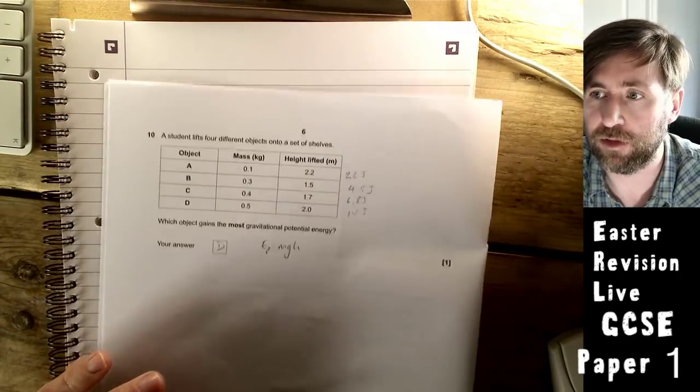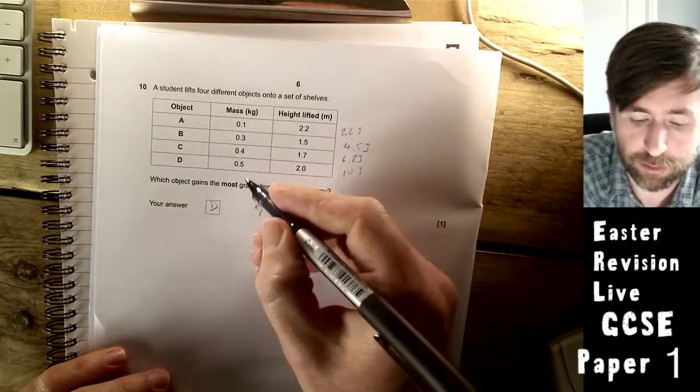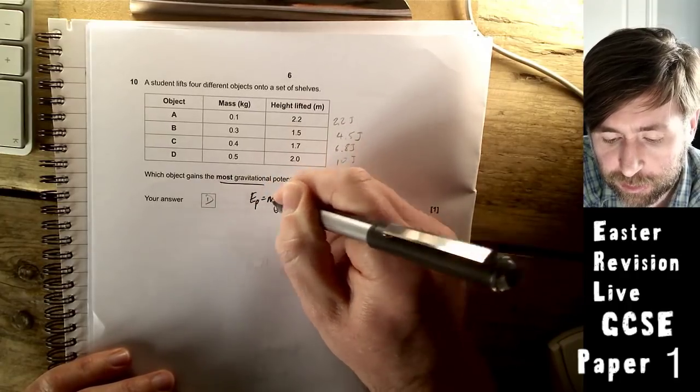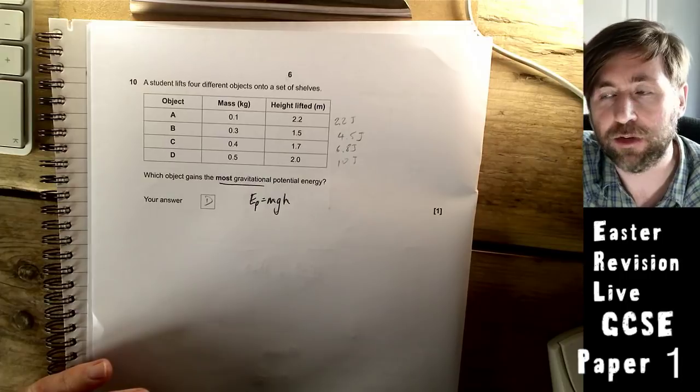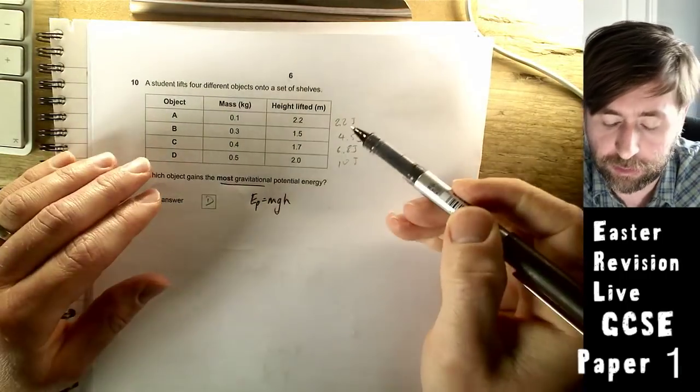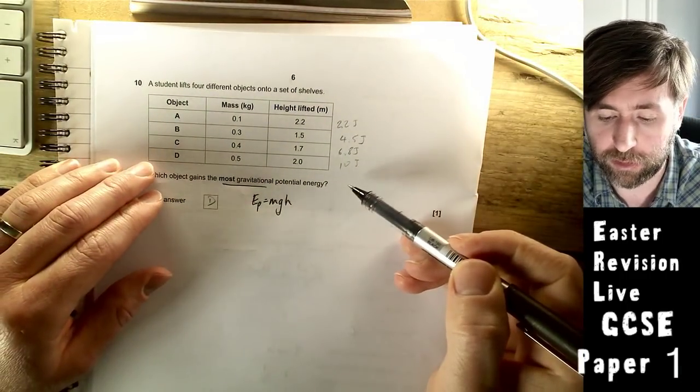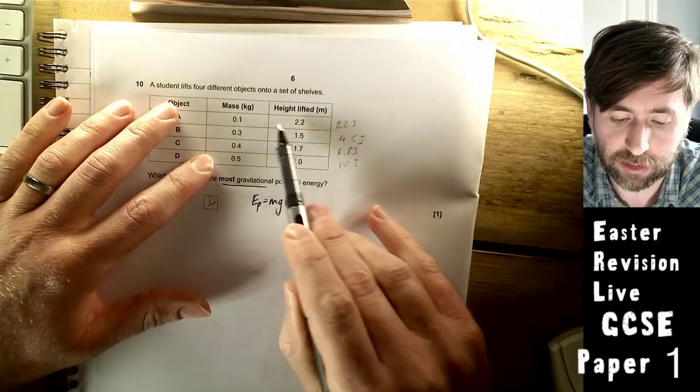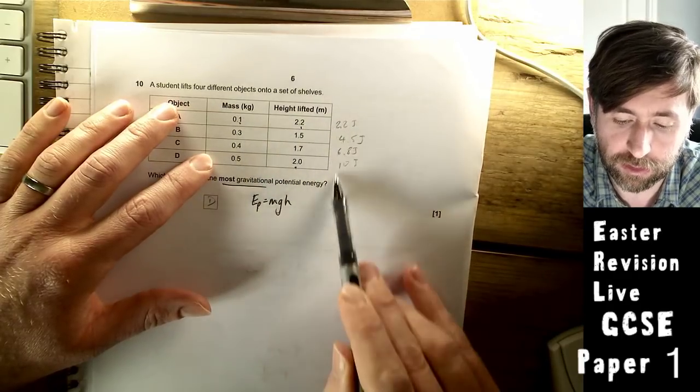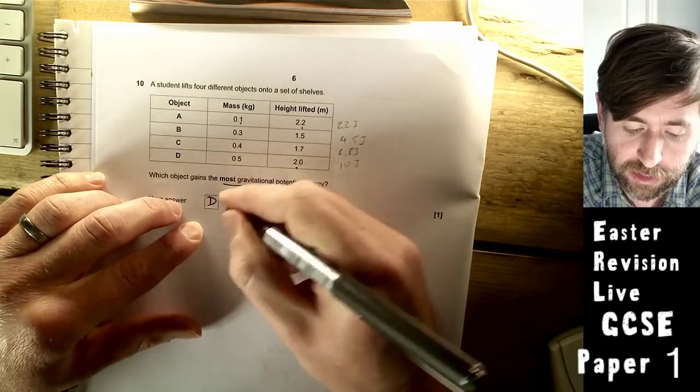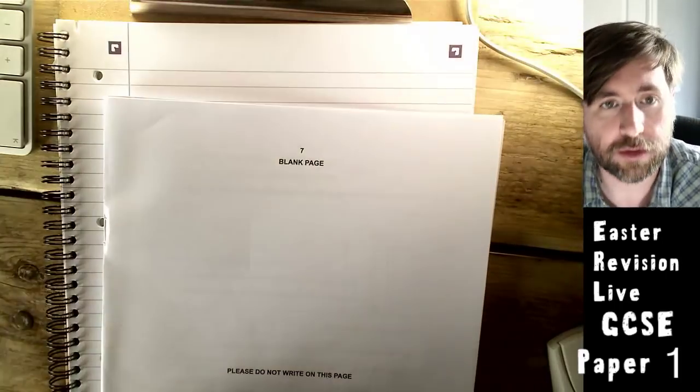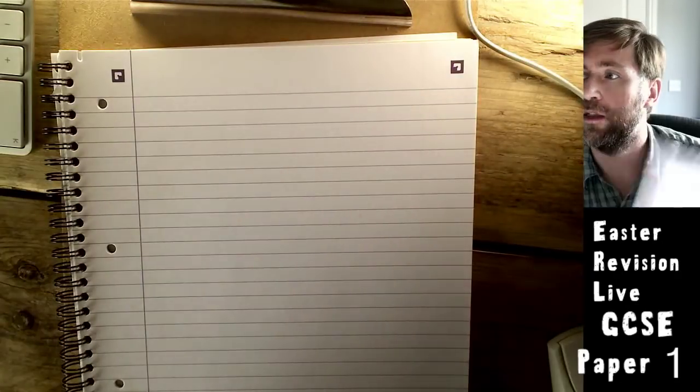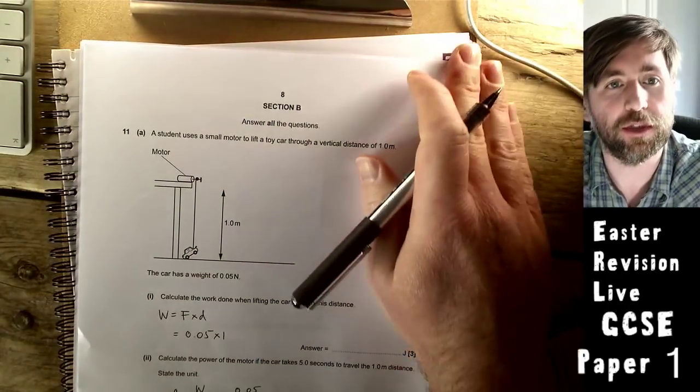A student lists four objects onto a set of shelves. Which one gains the most gravitational potential energy? You need to memorize this equation: gravitational potential is mgh, mass times gravitational field strength times height. We're looking for the most mass and the highest height. This one's got least mass but the highest height, so just quickly do that multiplication to decide that it's D.